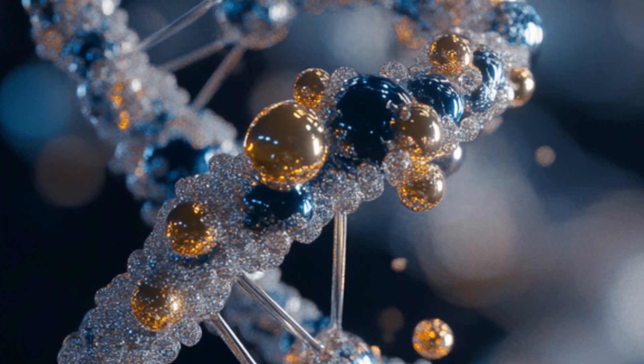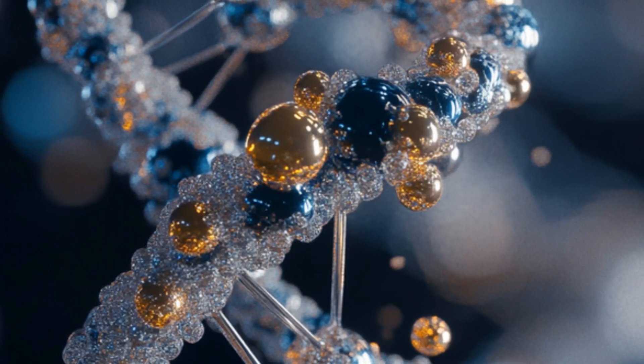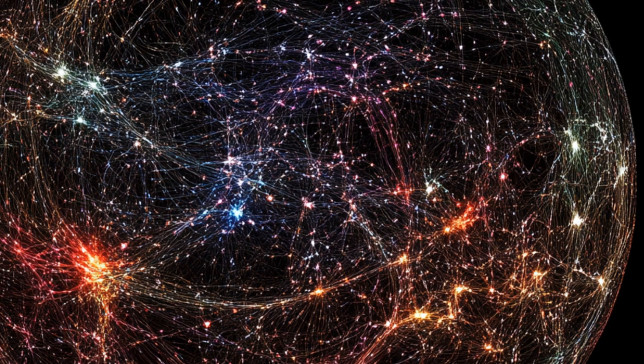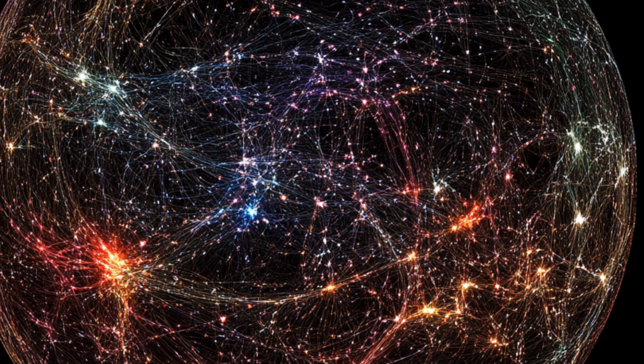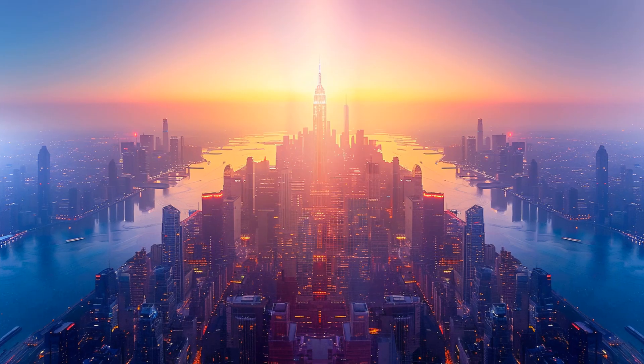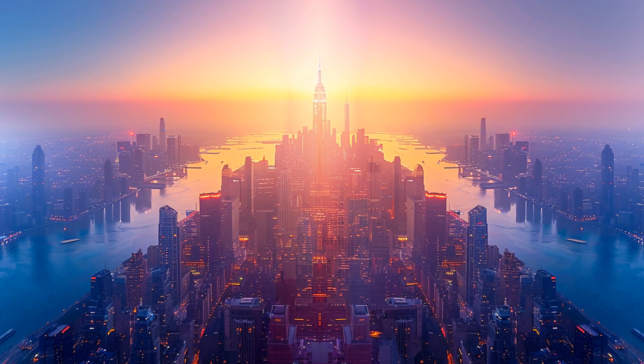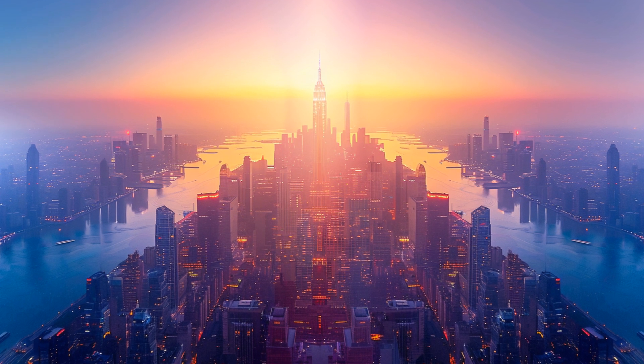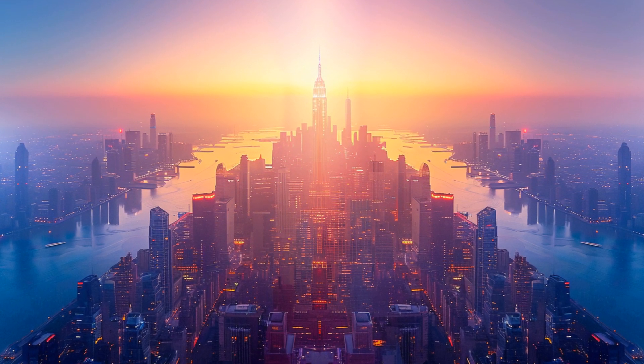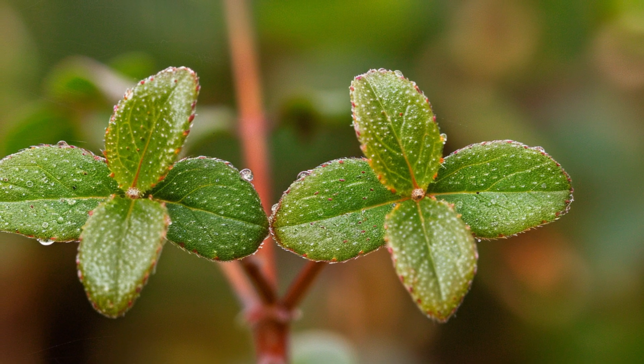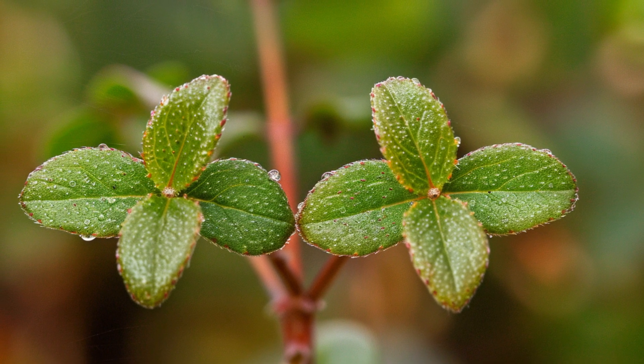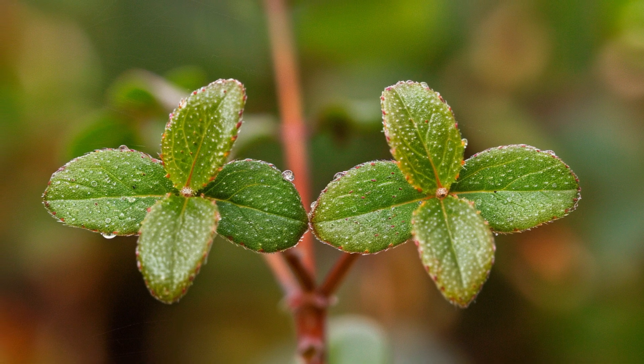DNA, the instructions for life, holds tons of information in its twisted ladder shape. Each rung of this ladder is a pair of molecules that encode the genetic instructions used in the development and functioning of all known living organisms. It decides what we inherit from our parents, how we look, and even some aspects of our behavior. Our DNA is a blueprint that shapes who we are and the amazing variety of life on Earth. From the smallest bacteria to the largest mammals, DNA is the common thread that connects all living things.